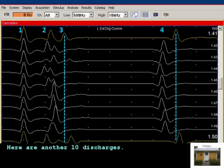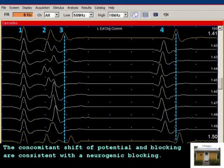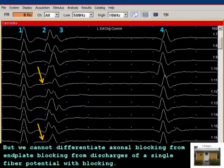Here are another 10 discharges. On the top and bottom traces, potentials 3 and 4 shift right together. The concomitant shift of potential and blocking are consistent with neurogenic blocking. The blocking in potential 2 could also be due to lesion in an axon. But we can't differentiate axonal blocking from end plate blocking from discharges of a single fiber potential with blocking.